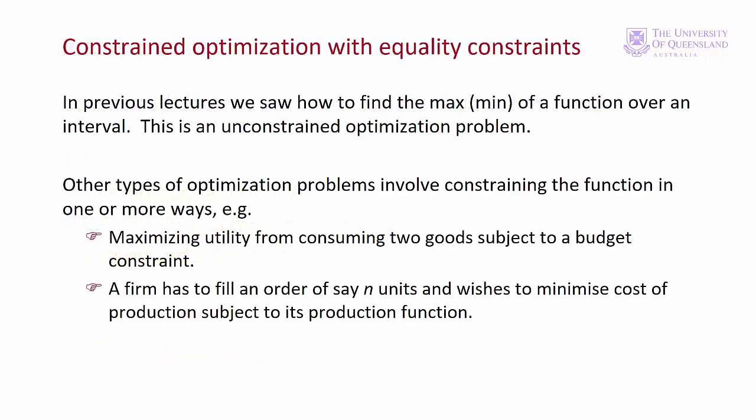In lectures 6 and 7 we examined unconstrained optimisation problems. In other words we had a function of one or more variables and we wanted to find the extreme points for the function, either local or global. There were no other considerations or constraints to take into account.